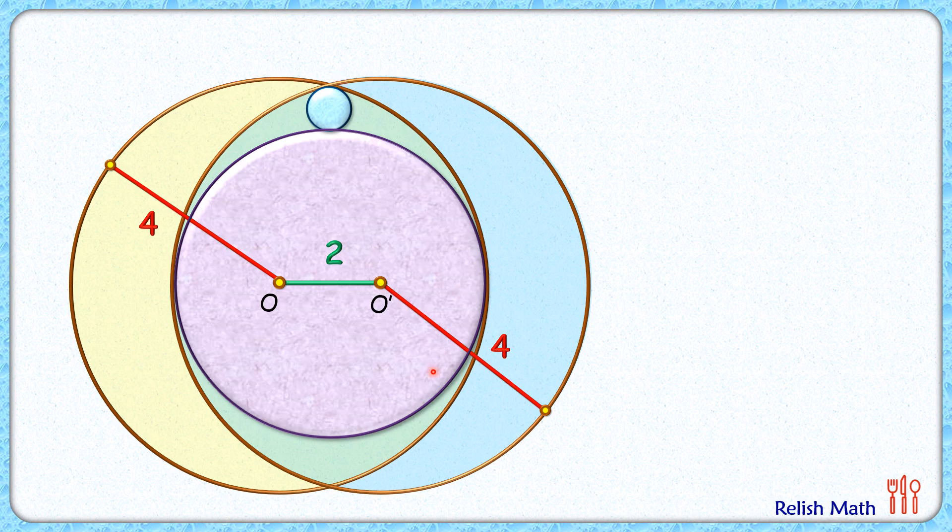This green part is the common part between both circles. Now this figure, if you observe, it's symmetrical along this vertical line here, and thus the center of this purple circle will lie on this green line. Let's call this point P. Now by symmetry, OP and PO dash will be equal in length, and thus they will be 1 cm each.